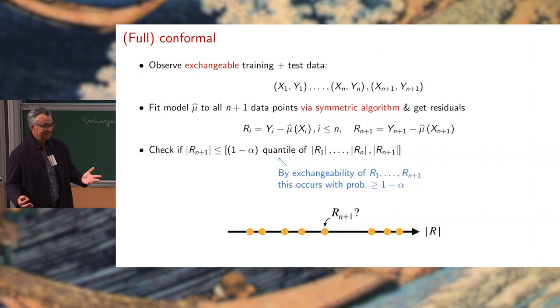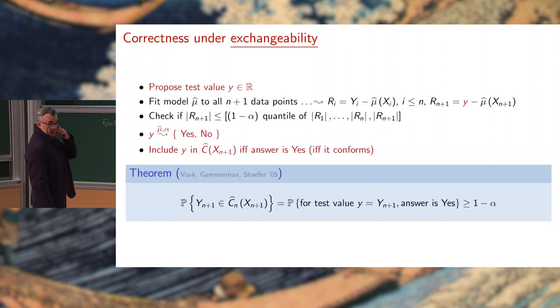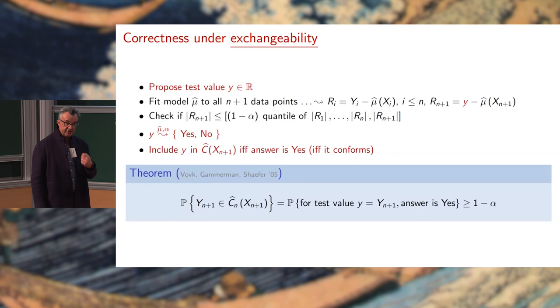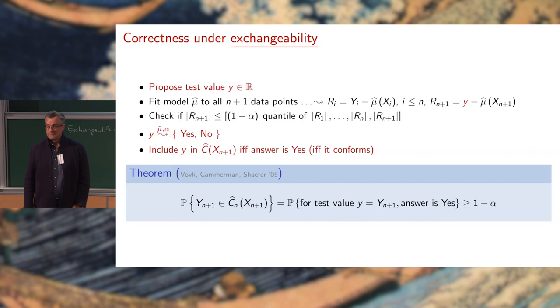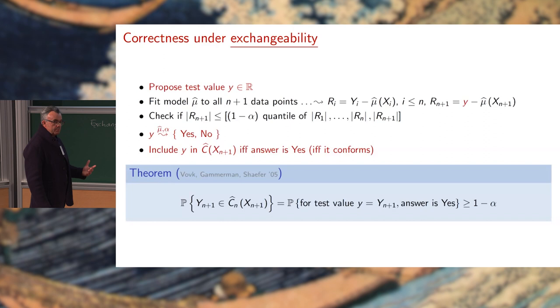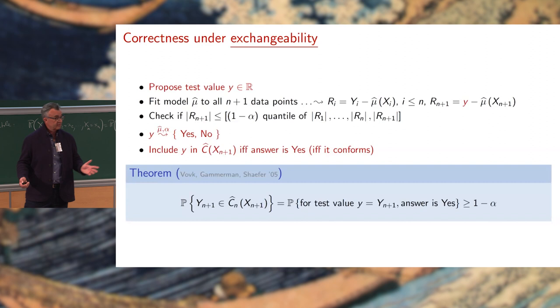All right. But, of course, I do not know y_{n+1}. Because this argument only works if I see y_{n+1}. And so, what is the model? The model is you're going to propose a test value. You're going to fit a model, assuming that your test value is y. And if your computed residual, and, of course, the residual depends on these test values, the model you fit depends on the test value. If you're in the bottom 90%, you're going to include it. If you're not, you're not going to include it. And then there's this beautiful result that says, well, this is a valid prediction interval. That is, the chance that y_{n+1}, for which the answer is yes, is exactly 90%. It's not about 90%, it's exactly 90%.